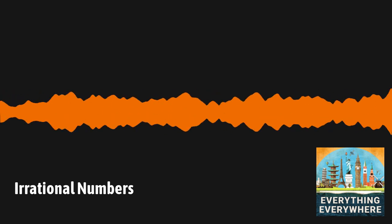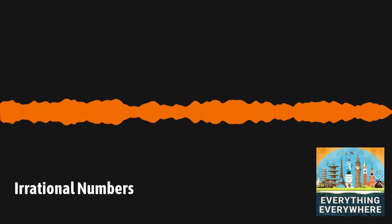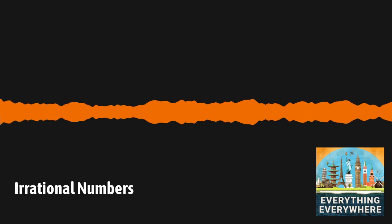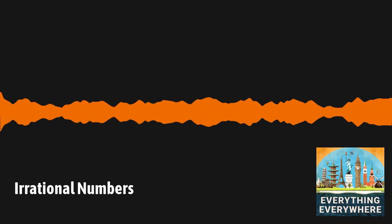So, what was the big hullabaloo over irrational numbers? Why is this something that's worth doing a podcast episode about? The story of irrational numbers starts over 2,500 years ago in ancient Greece with the cult of Pythagoras.